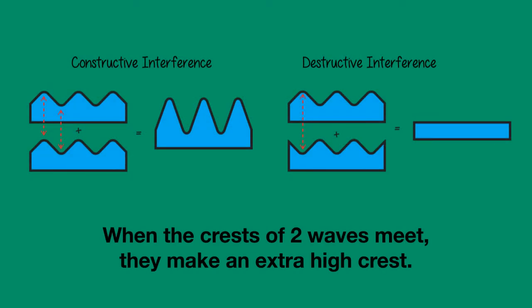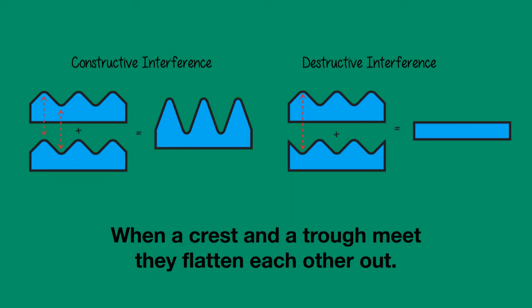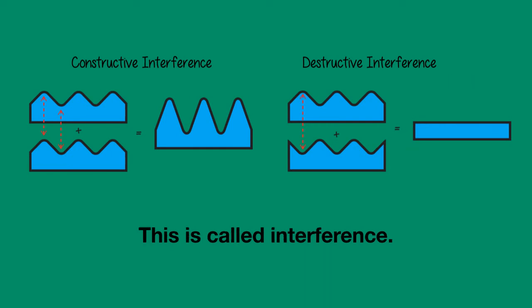Let's have a look at what happens when waves start to interact. When the crests of two different waves meet, they will make an extra high crest. The same way, when two troughs meet, they make an extra deep trough. And when a crest and a trough meet, they flatten each other out. We call these patterns interference.